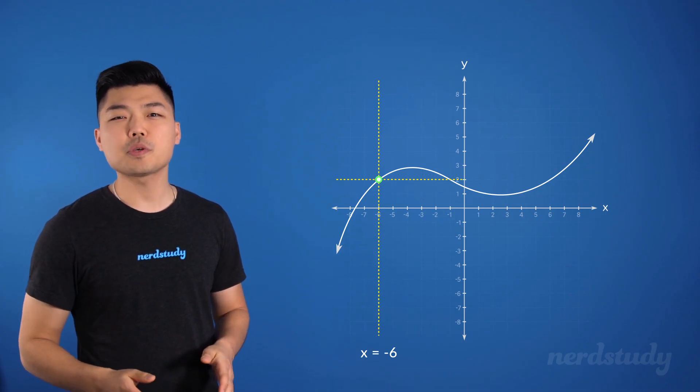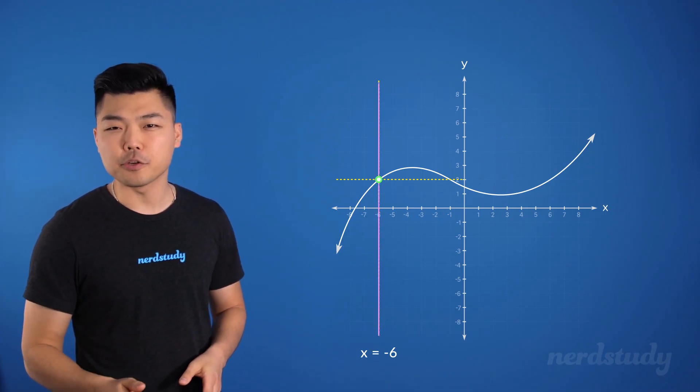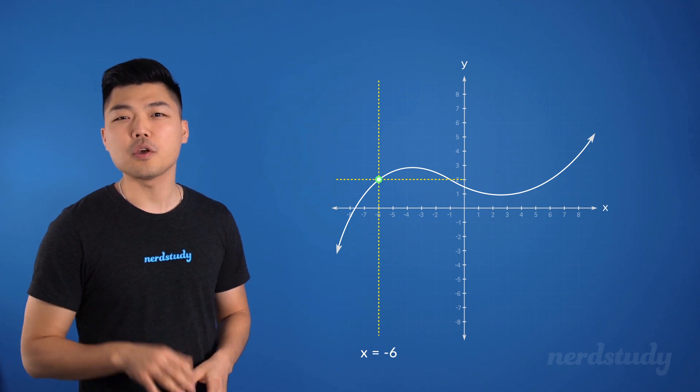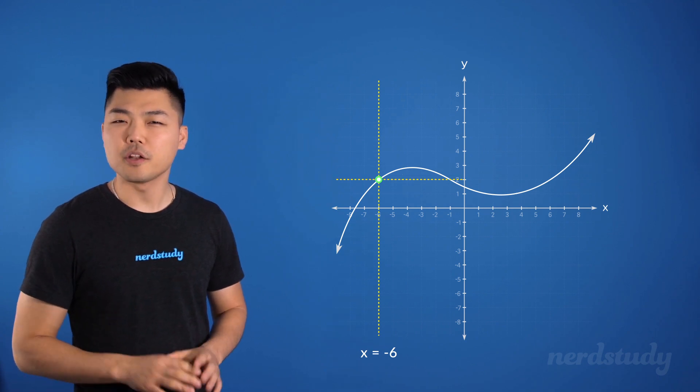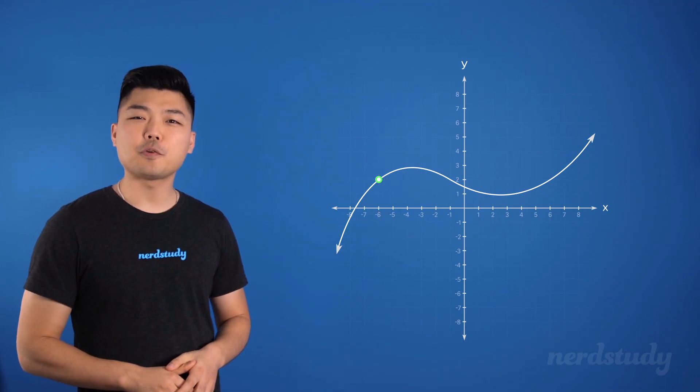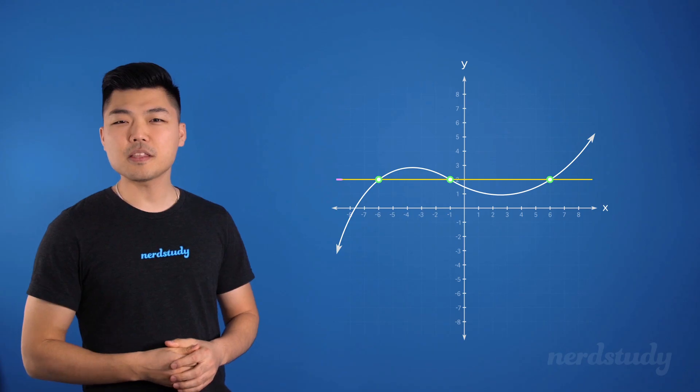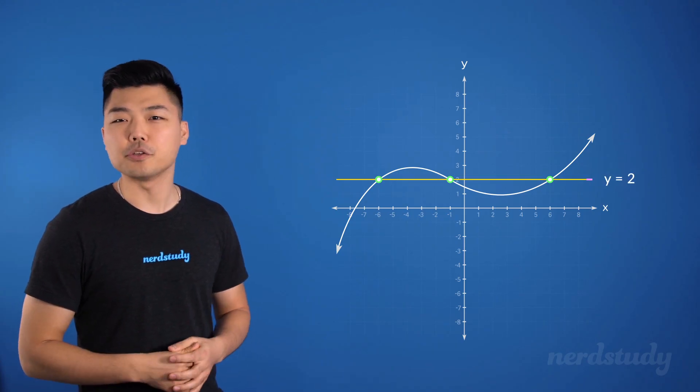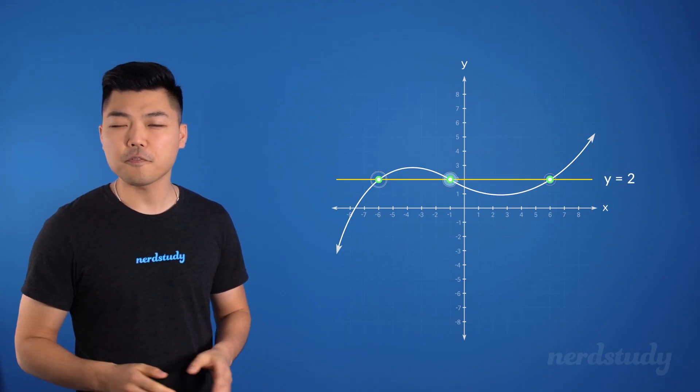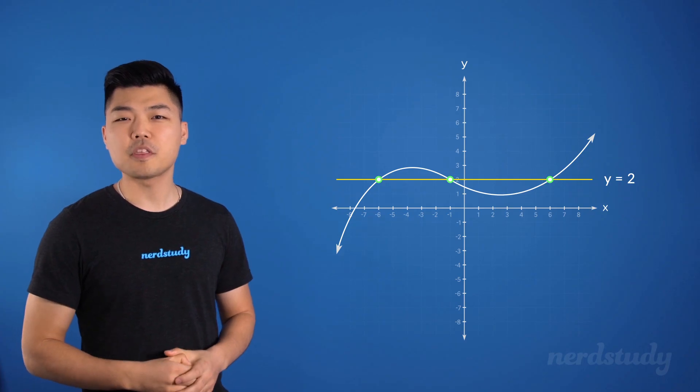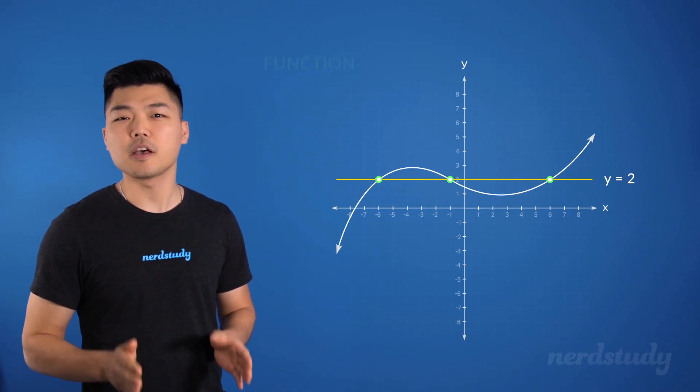However, notice how we said that one x value needs to map onto only one y value, and not the other way around. For example, if we drew a horizontal line through this graph, we'd see that for this one y value, we have multiple different x values.